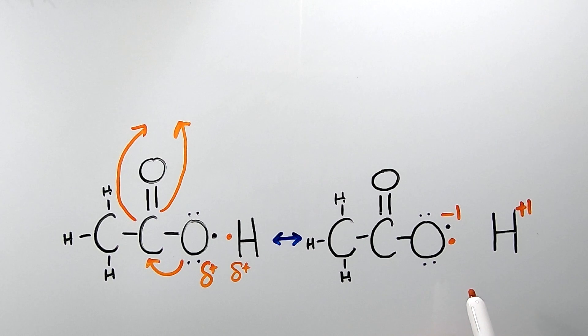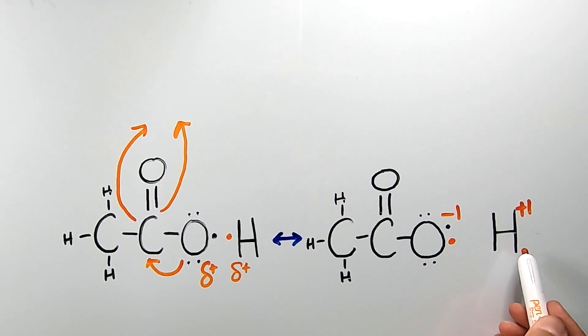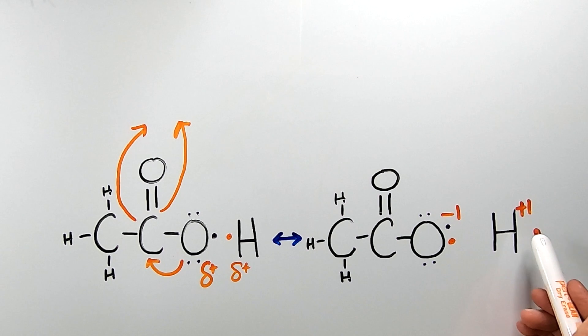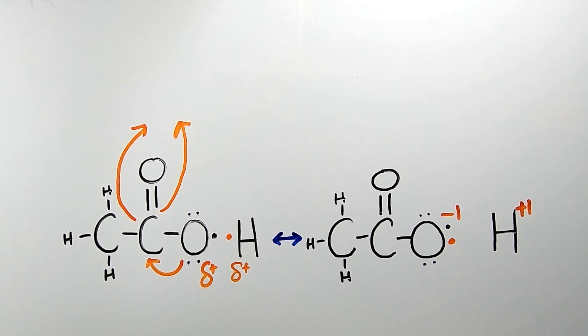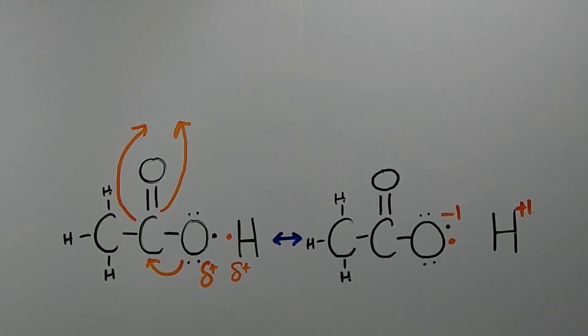Formal charge is obtained when atoms lose or gain electrons. When they lose electrons, they obtain a positive formal charge; when they gain electrons, they obtain a negative formal charge — just like ions. In the previous example, we saw how formal charges can result upon bonds breaking. In this next example, we're going to see how formal charges can result upon bonds forming.